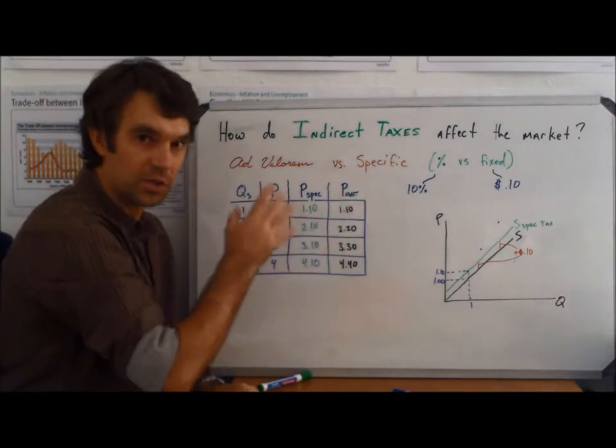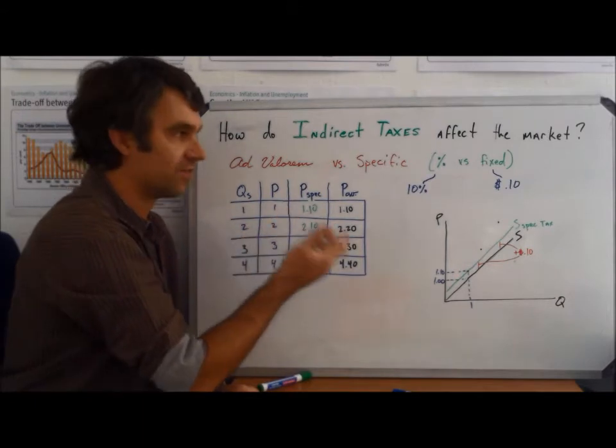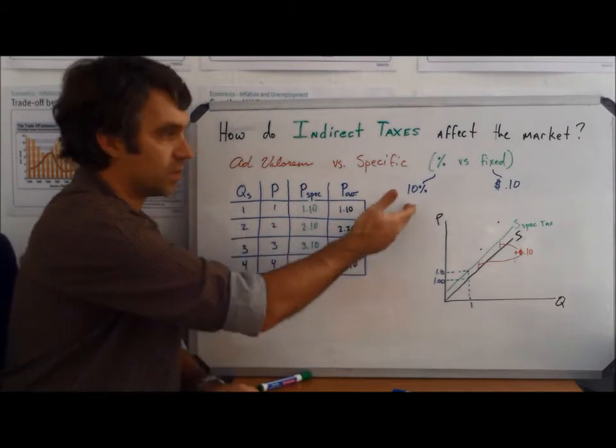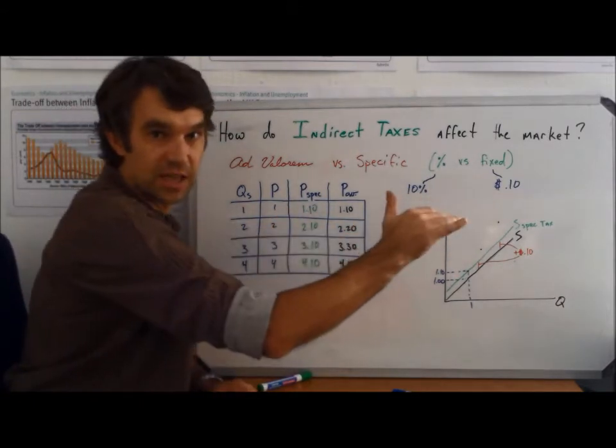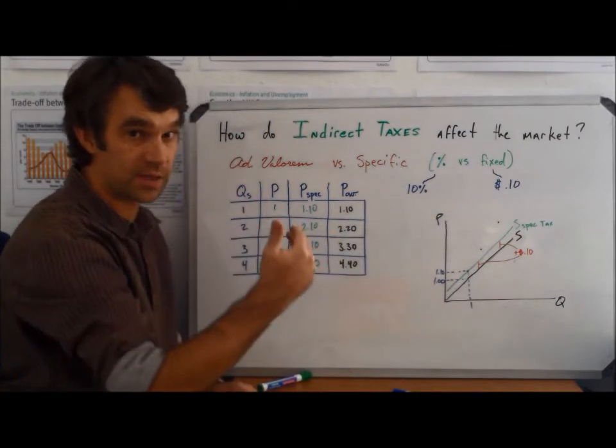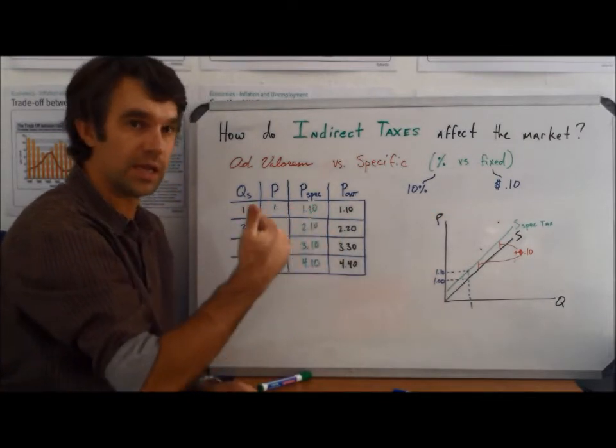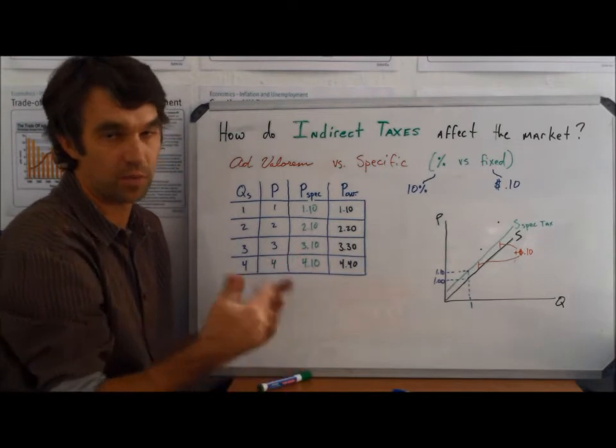A specific tax is what we used in the past example, where it's a fixed amount, so instead of 10%, maybe it's just 10 cents. It doesn't matter if the price is a dollar or $10, it gets increased by just one fixed amount, 10 cents.